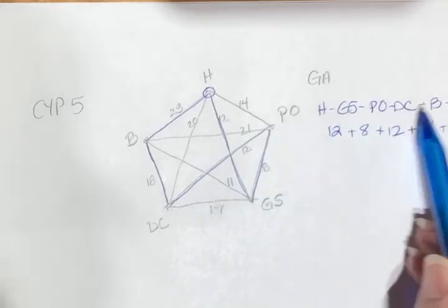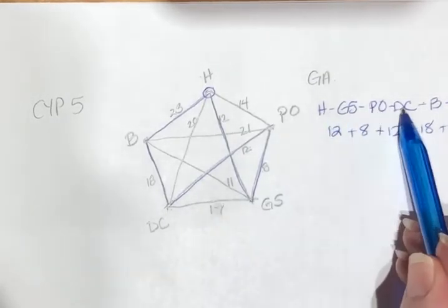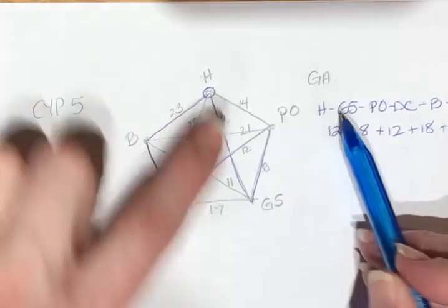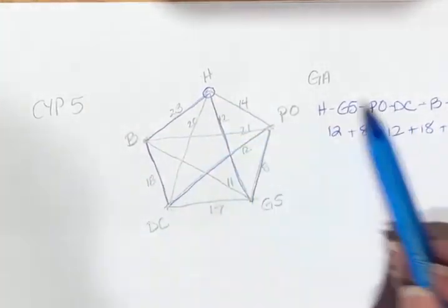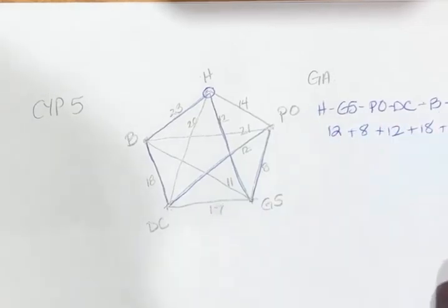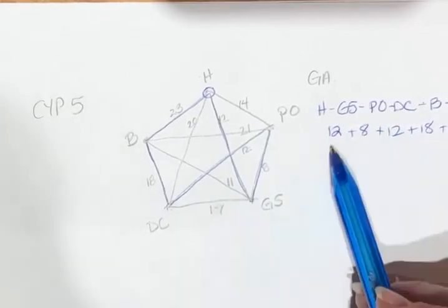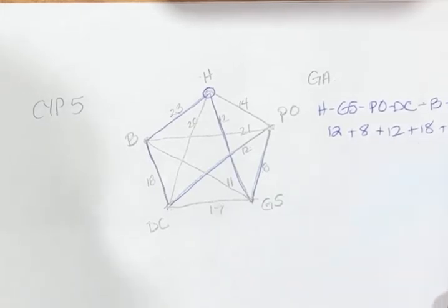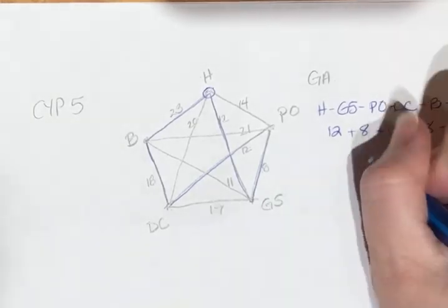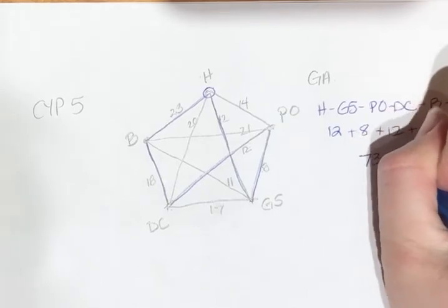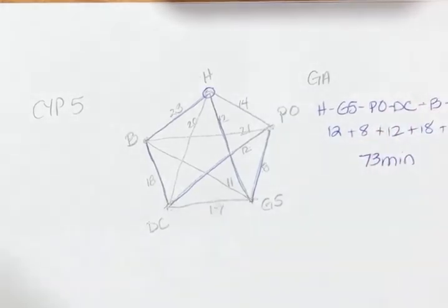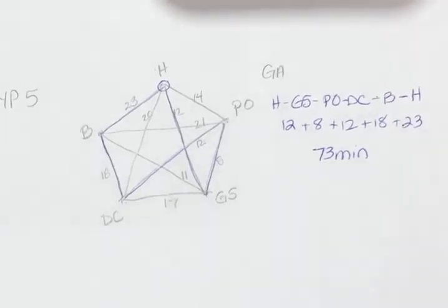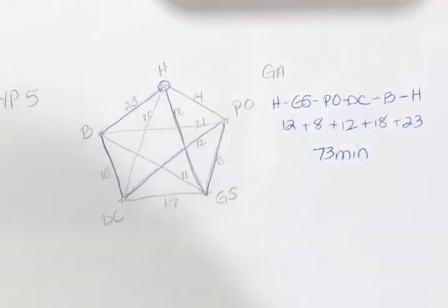So one, two, three, four, five. We have five vertices, six edges: one, two, three, four, five, six. So 20, 30, 40, 50, 60, 73. So it would take her 73 minutes on this path, and that's using the greedy algorithm.